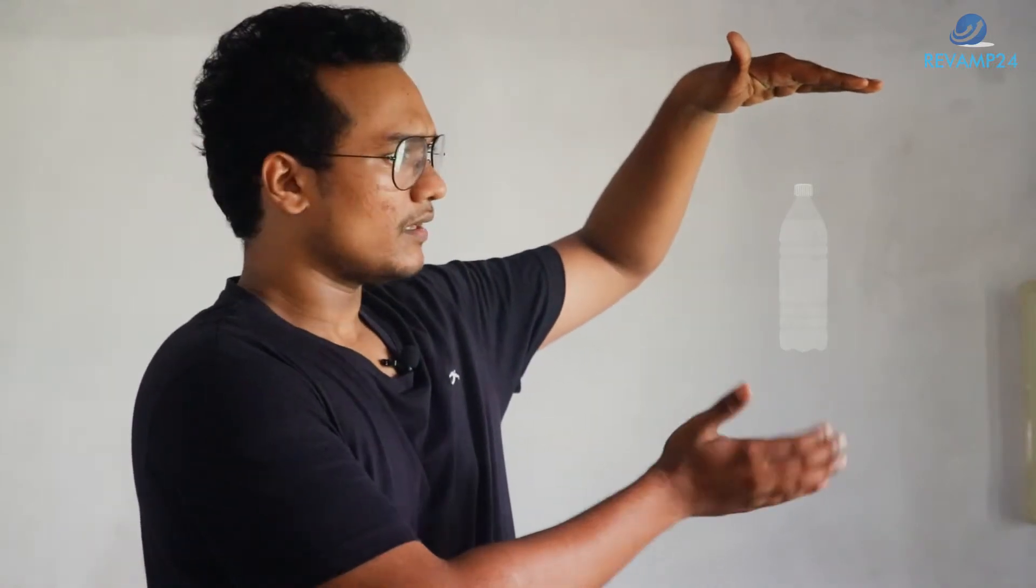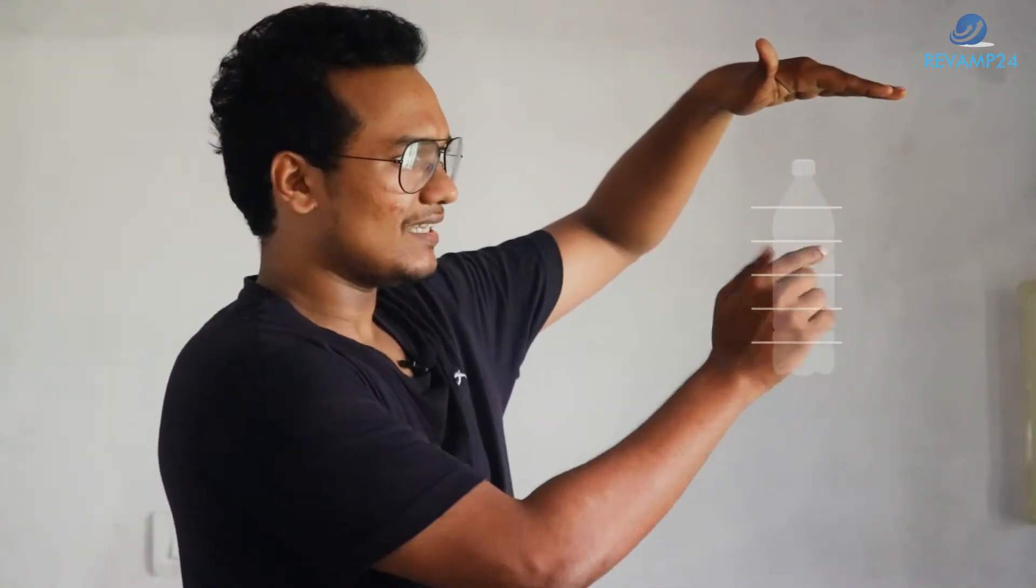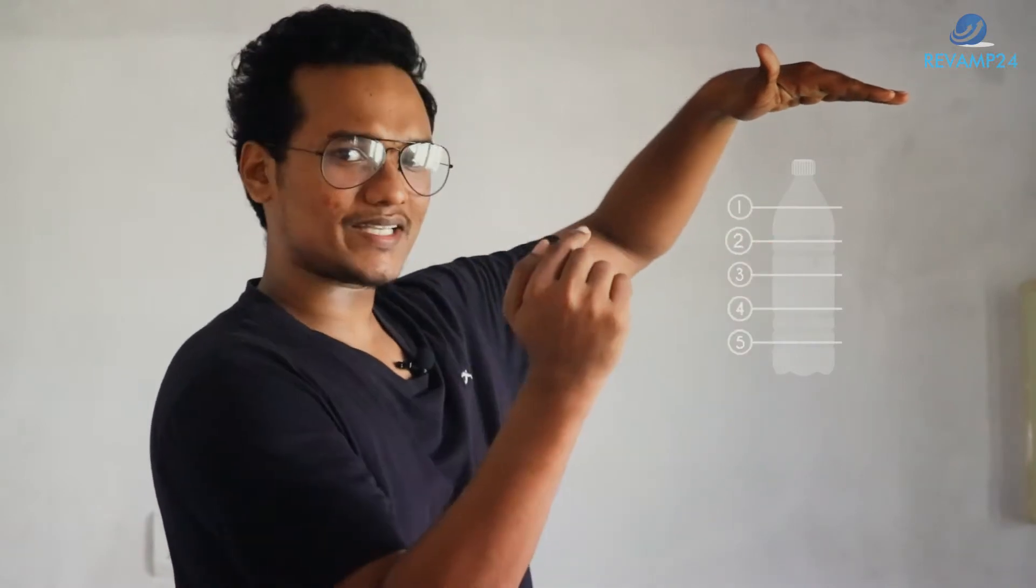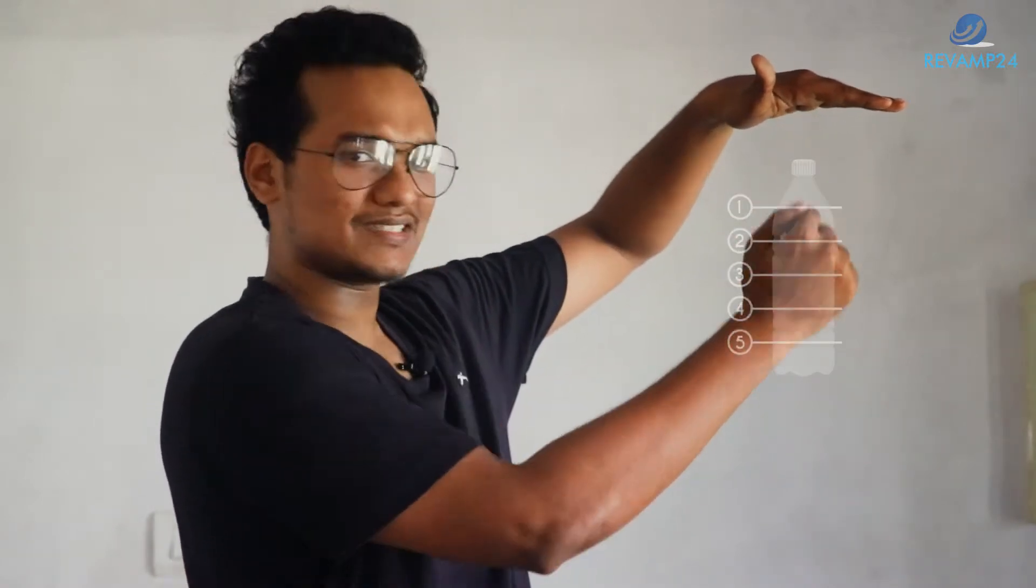What is fluid pressure? Let's visualize this with the help of a bottle full of water. Divide this into five layers. On the second layer, the water which is occupied between the first and second layers is exerting pressure due to the weight of the water in between.